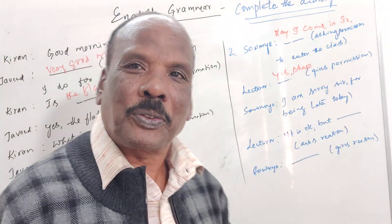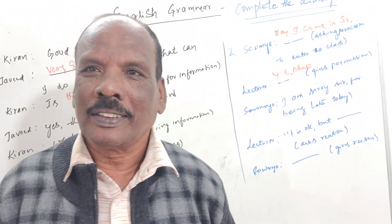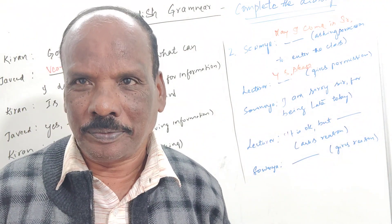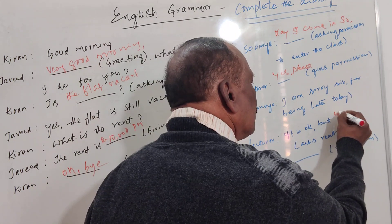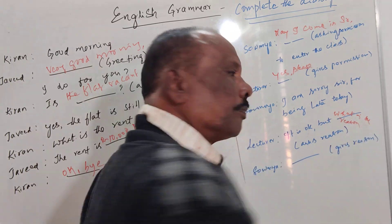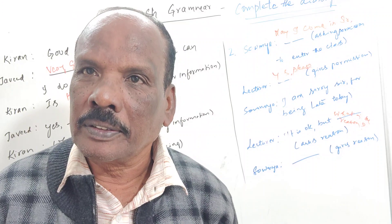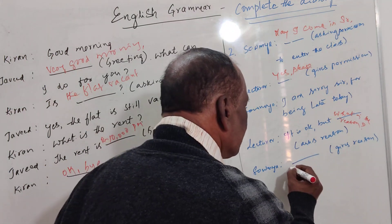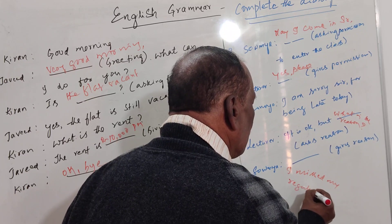Soumya says, 'I am sorry, sir, for being late today.' The lecturer replies, 'It is okay, but may I know the reason? What is the reason for being late?' Soumya says, 'I missed my regular bus.' So for that, we get four marks easily.